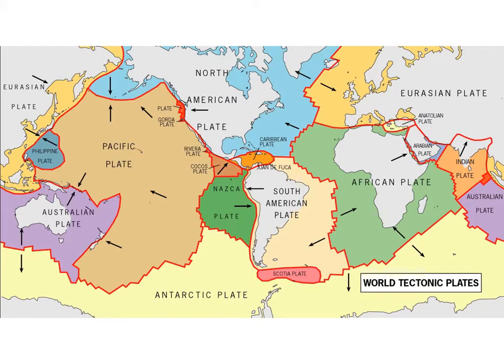Our entire crust is made up of plates, and these plates are all moving in different directions. One important thing to remember is that the plates can be made up of both continental crust and oceanic crust, just oceanic crust, or just continental crust. The directions the plates are going determines some of the landforms that are created or the events that occur.